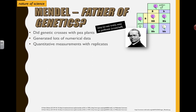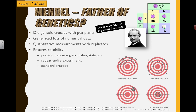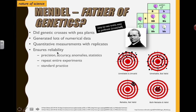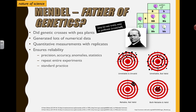He generated lots of numerical data, he did a lot of quantitative measurements, and he did replicates — which means he repeated his results. This ensures reliability, and in science we want experiments to be reproducible and repeatable. It ensures precision — that repeat measurements are actually matching the previous measurements. Accuracy means the numbers are actually representing what the actual data is supposed to be. It also helps to eliminate anomalies — when there's weird ones we want to figure out if that's supposed to happen or if we just need to repeat due to other unforeseen circumstances.